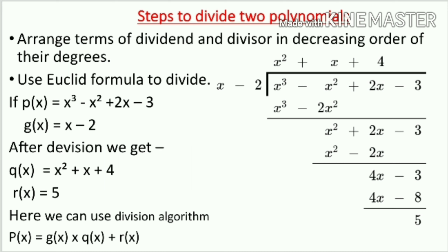Here are the steps to follow. First, arrange the terms of the dividend and divisor in decreasing order of their degrees — that means decreasing powers of the variables. Second, apply Euclid's formula to perform the division.